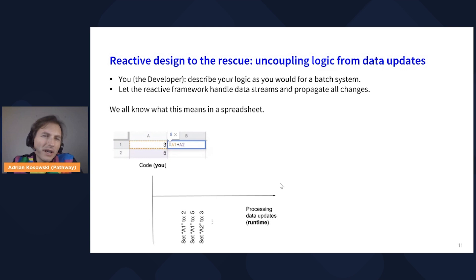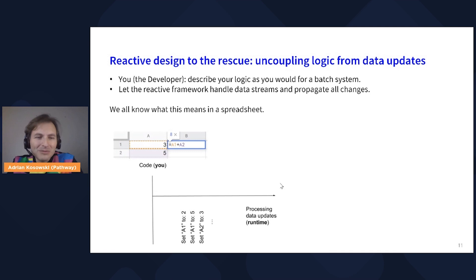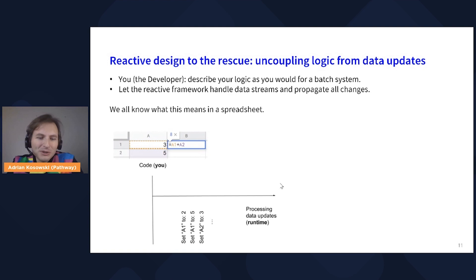As the developer, you focus on describing your logic as you would for a batch system, and you let the reactive framework behind the scenes handle all the data stream processing and propagate all changes. For anyone who has used a spreadsheet — which means all of us — the separation is pretty clear. When programming in a spreadsheet, all we do is declare the logic. For example, we want cell B1 to be the sum of cells A1 and A2. We put up this rule and let the spreadsheet underneath take care of all the data updates going on. Today my objective is to show you what this means for a machine learning pipeline working specifically in Python with data frames or tables.